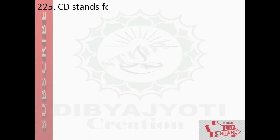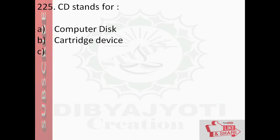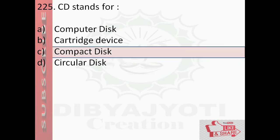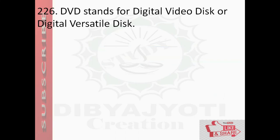Question number 225: CD stands for — option A, computer disk; option B, catered device; option C, compacted device; option D, circular disk. The answer is option C, compact disk.